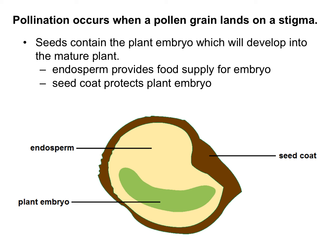This is the structure of each of the seeds inside the ovary, inside the fruit. The seed contains a plant embryo, which will develop into a mature plant. Make sure to label your diagram with these three labels: the plant embryo, the endosperm — which will feed that embryo as it grows — and the seed coat, which is a protective covering surrounding the entire thing.